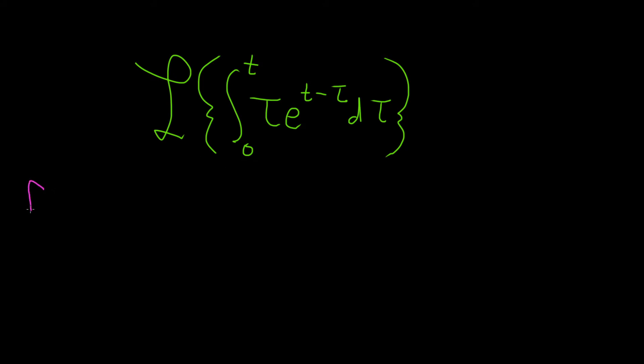So if you have two functions, f and g, and you look at what's called the convolution of these functions, this is defined to be the definite integral from 0 to t of f of tau times g of t minus tau d tau. This is called convolution.